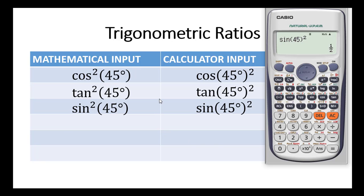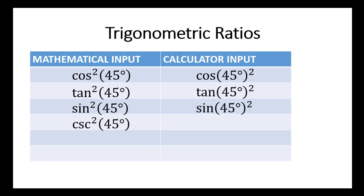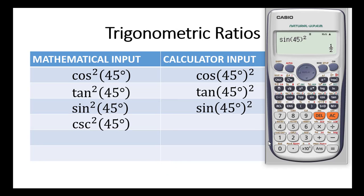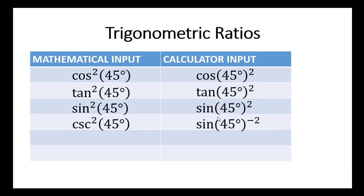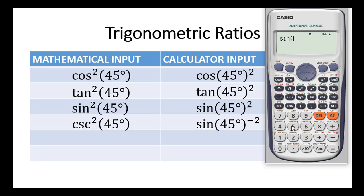Now let's come to the squares of their reciprocals. Let's start with cosec squared 45 degrees. Remember, the cosecant ratio is the reciprocal of the sine ratio. So you simply key in sine 45 degrees, close the parenthesis, to the exponent negative 2 — remember it's a reciprocal, that is why we are introducing the negative sign. Press sine 45, close the bracket, then press the x-to-the-power key and key in negative 2 as your exponent. Press equal to — the answer is 2.